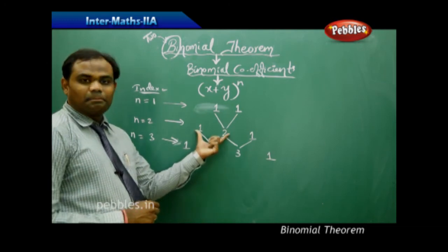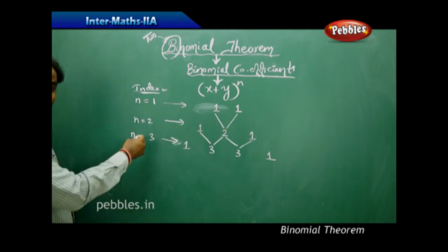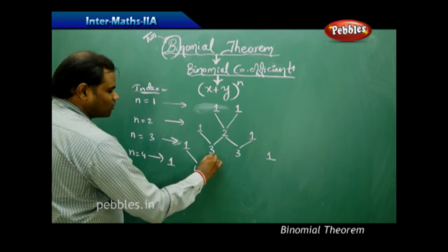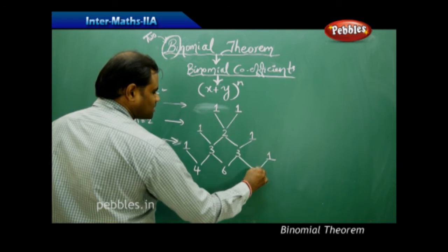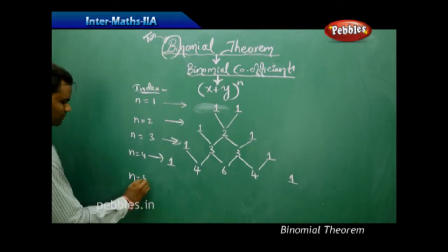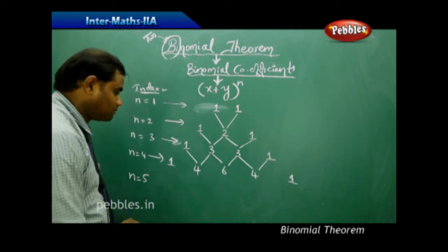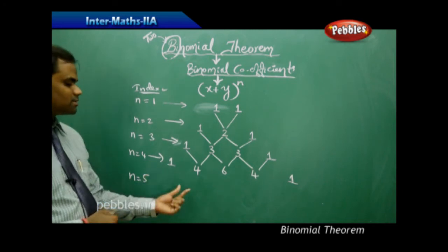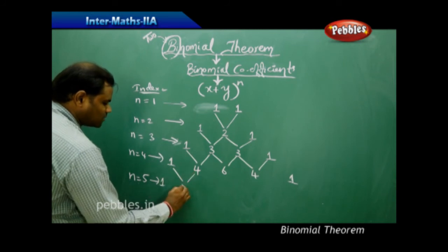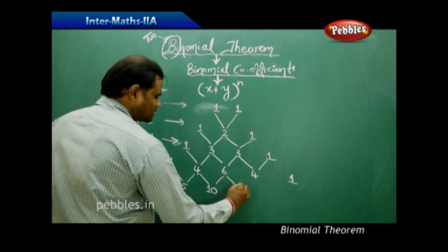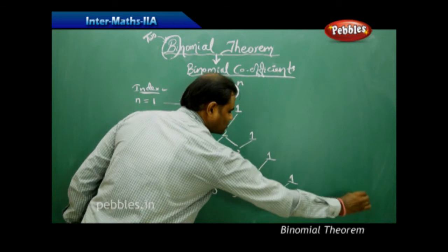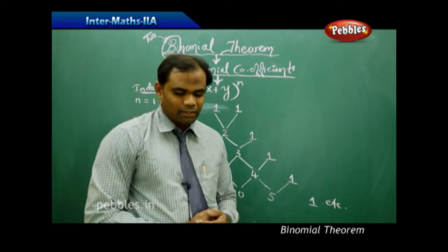Each term is obtained by adding pairs from the previous row, with the first and last terms always being 1. For n=4: 1+3=4, 3+3=6, 3+1=4, giving 1, 4, 6, 4, 1. For n=5, which we didn't expand previously, I can find the coefficients using the previous row: 1+4=5, 4+6=10, 6+4=10, 4+1=5, giving 1, 5, 10, 10, 5, 1.